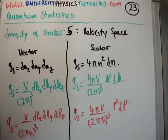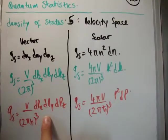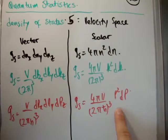It's direct continuation from density of states number 4. So down here I've got the density of states in vector momentum space and scalar momentum space.